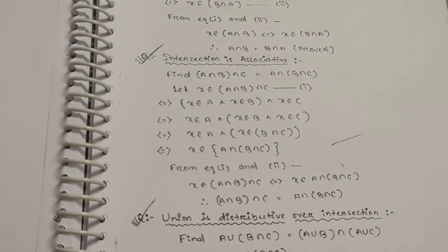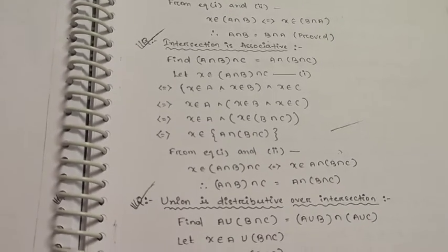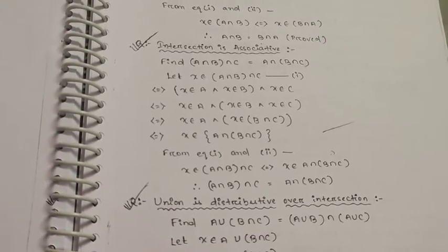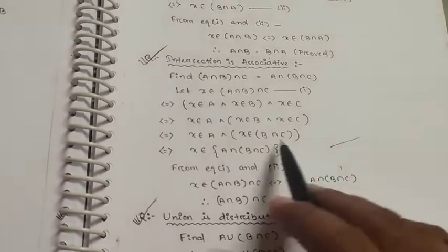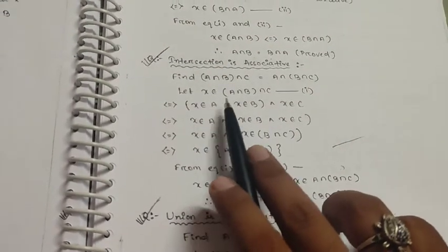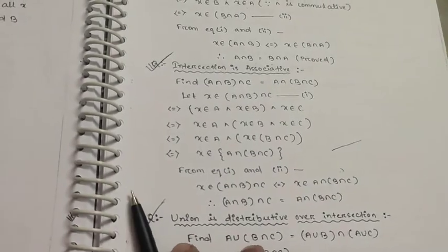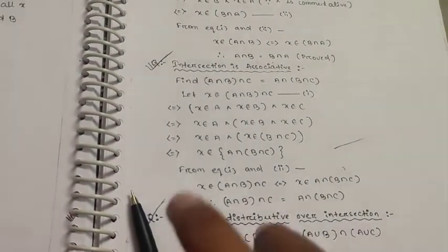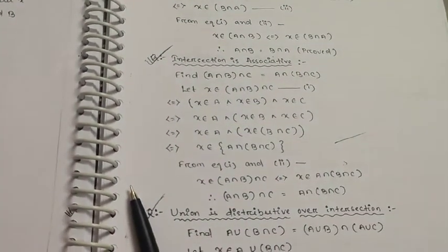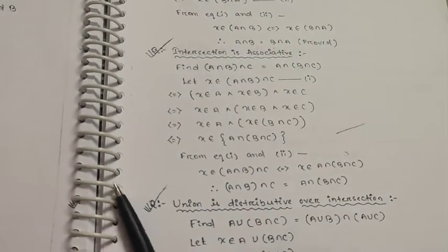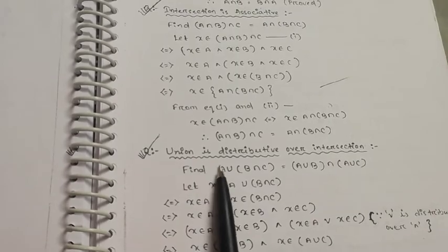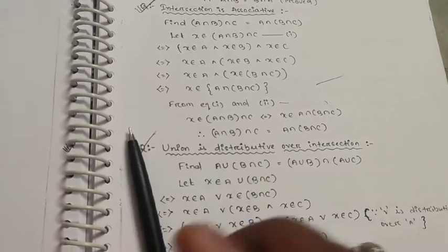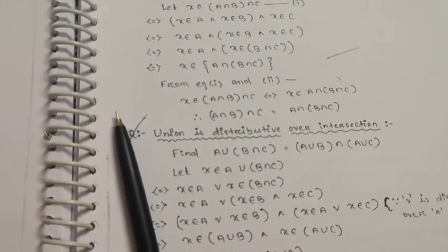Intersection is also associative: (A intersection B) intersection C equals A intersection (B intersection C). The proof follows similarly to the union case. Also, union is distributed over intersection: A union (B intersection C) equals (A union B) intersection (A union C).